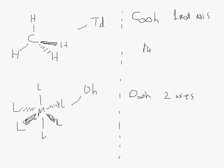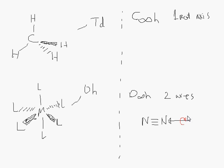The example I used last time was N2. N2 is D∞h because it has two rotation axes. There's infinite rotation going straight down the two ends along the triple bond, but you've also got a C2 from this end. So obviously the primary rotation axis is the infinity axis, and you call it D∞h.